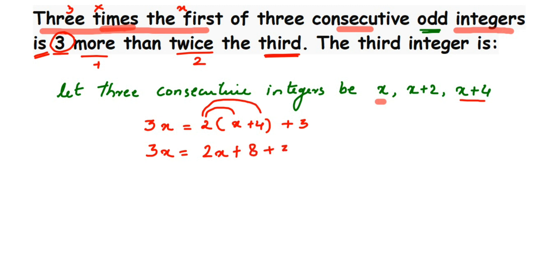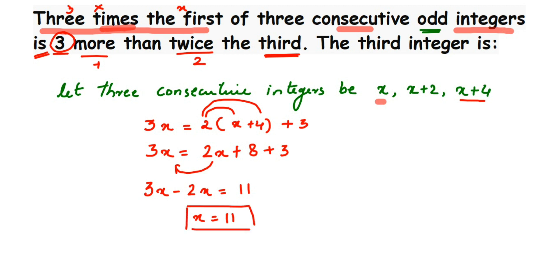Bring all variables to one side and constants to the other. Using the transpose method — when transposing, signs change — 2x is positive so it becomes negative on the other side: 3x minus 2x equals 8 plus 3, which is 11. So 3x minus 2x gives x, therefore x equals 11.